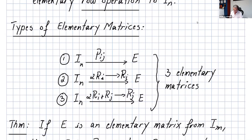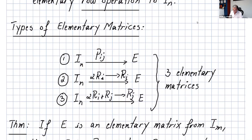There are three types of elementary matrices. First, take I_n and interchange two rows — that gives an elementary matrix. Second, take I_n and multiply a row by a constant — that also gives an elementary matrix. Third, take I_n, multiply a row by a constant and add it to another row — the result is again an elementary matrix.